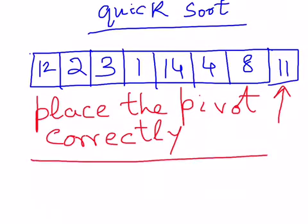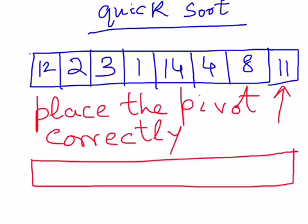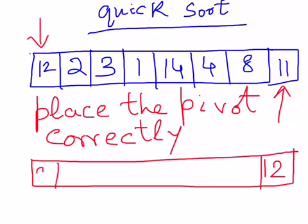We divide the array into two parts. All elements smaller than the pivot element are placed to the left side of the array. For example, checking each element: 12 is not smaller than the pivot element 11, so 12 goes to the right side. 2 is smaller than 11, so 2 goes to the left. 3 is similarly smaller. 1 is smaller as well. 14 is not smaller than 11, so 14 goes to the right.